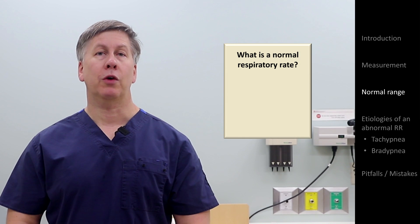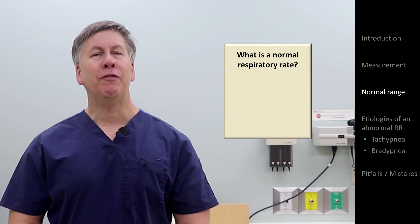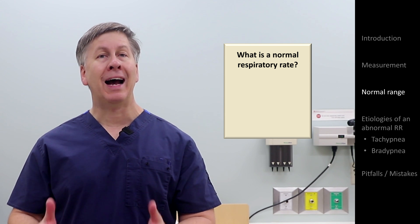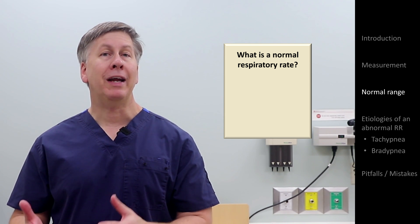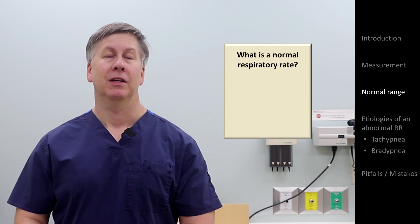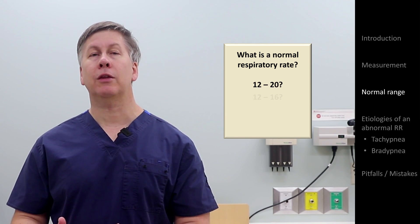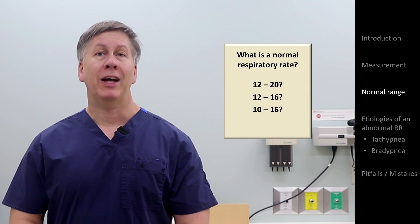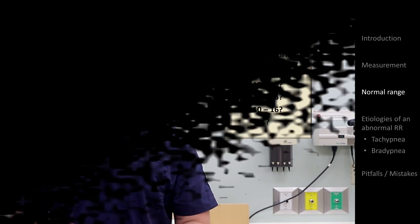The normal range of the respiratory rate is an interesting question. Everyone seems to know what it is, but if you ask different clinicians, you find that the ranges they respond with are not the same. Some will tell you 12 to 20, while others say 12 to 16, or even 10 to 16. That's because references themselves don't agree on this.